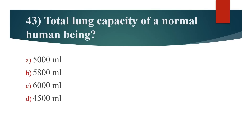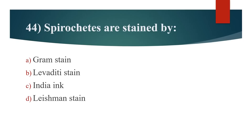43rd question: Total lung capacity of a normal human being? Option A: 5000 ml. Option B: 5800 ml. Option C: 6000 ml. Option D: 4500 ml. Answer is Option C: 6000 ml.